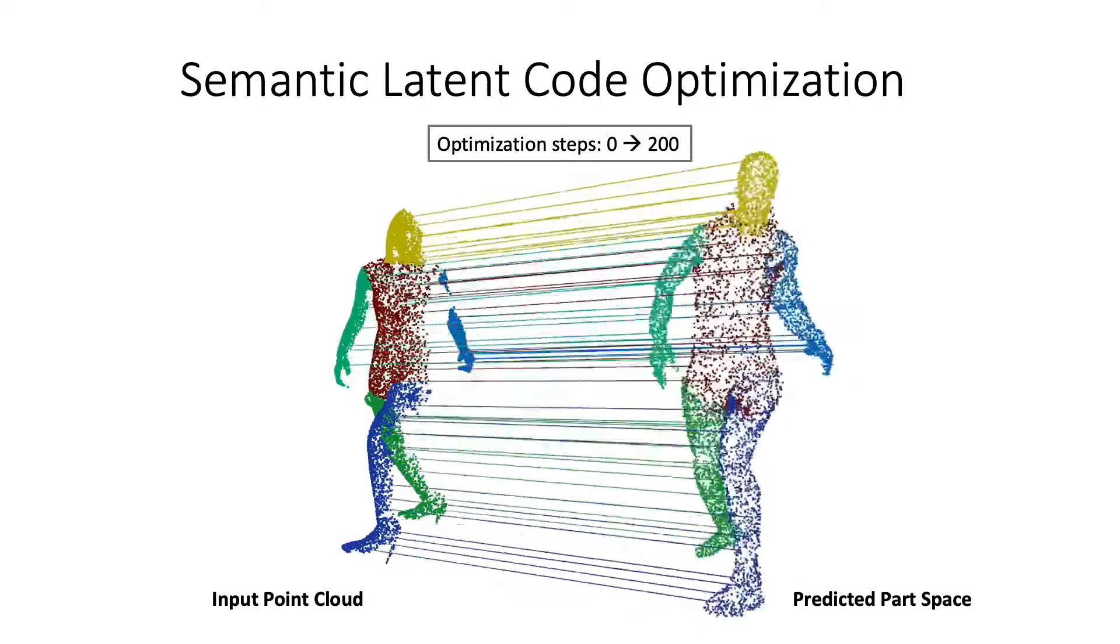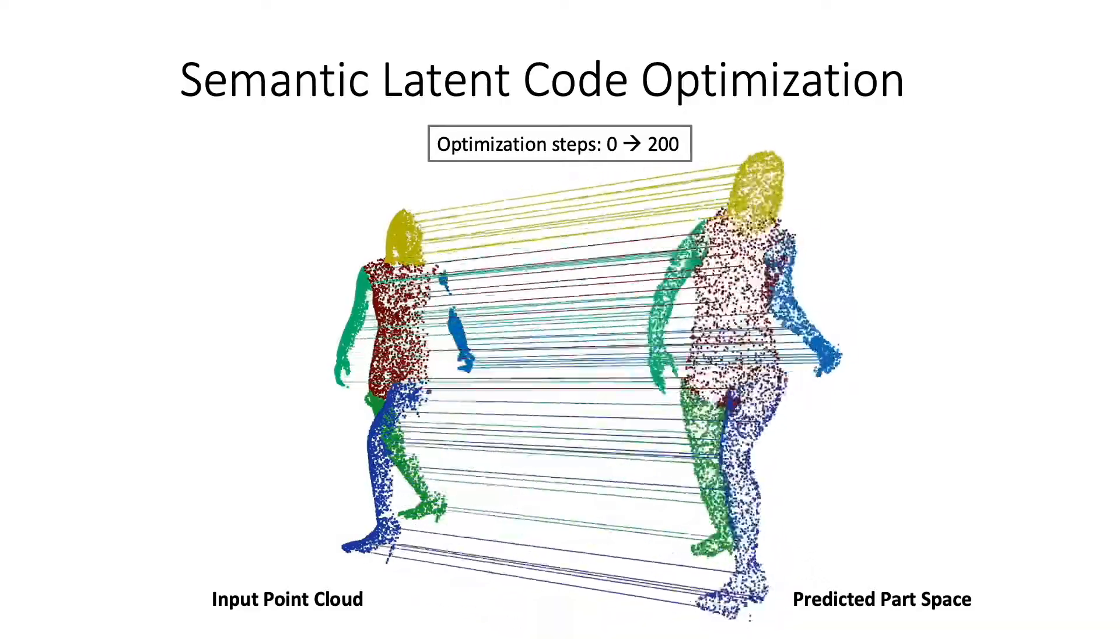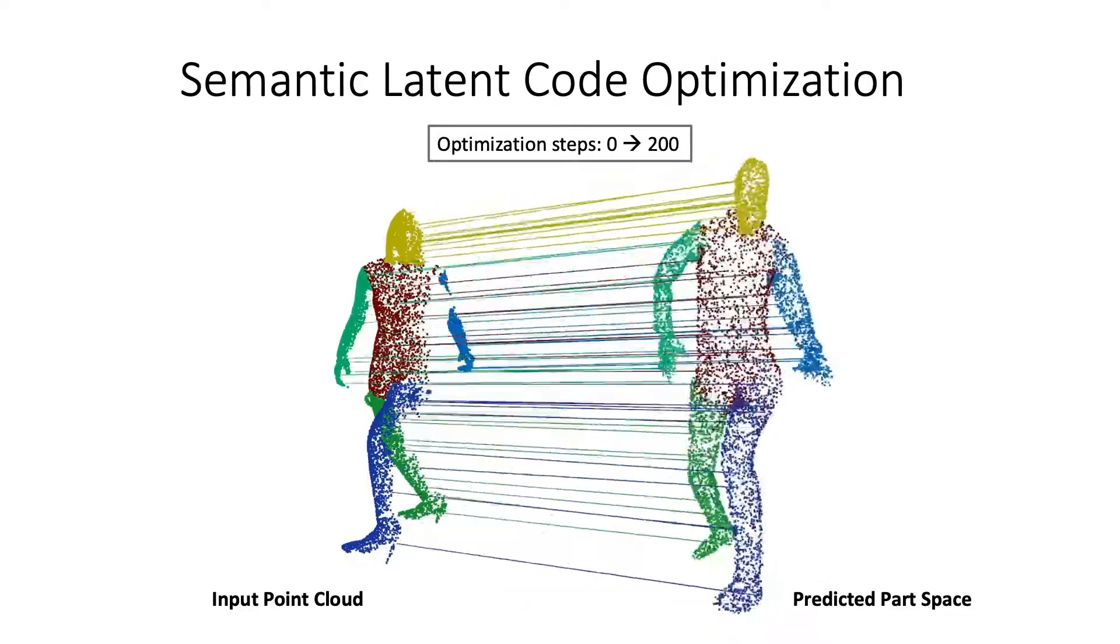Here, for a single depth frame, we show how our test time model fitting converges across optimization steps, guided by our coarse semantic correspondences.